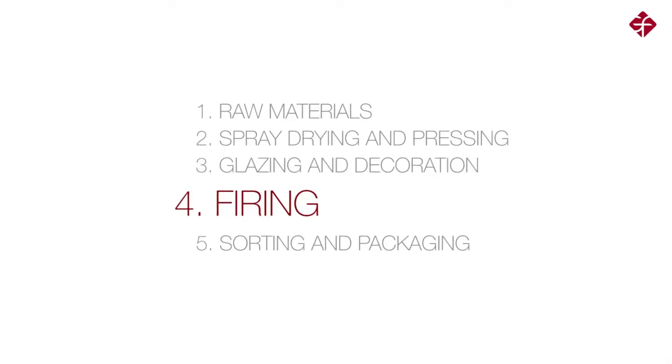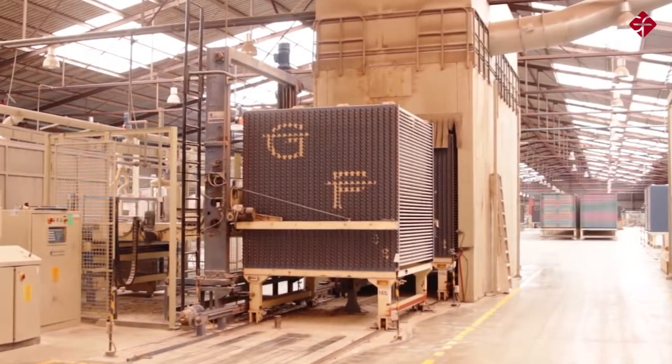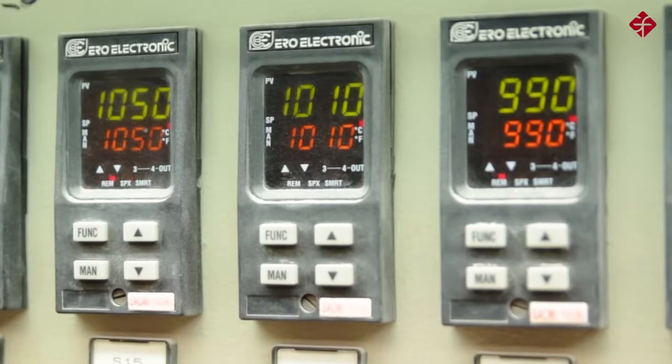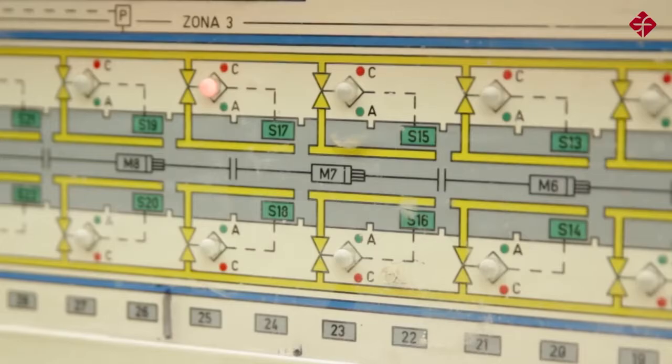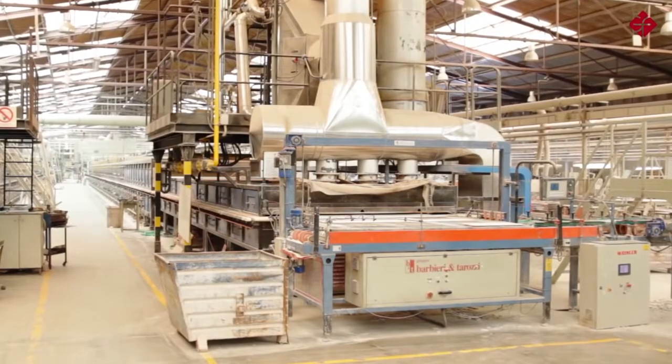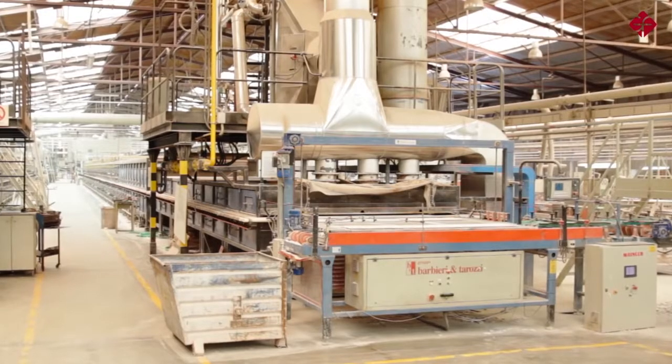Firing. The next and crucial step is firing the tiles. Firing is performed in single layer roller kilns, using very fast firing cycles of about 45 to 60 minutes. These kilns are fired by gas.